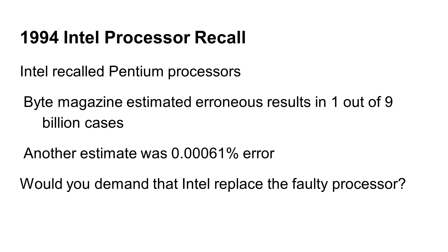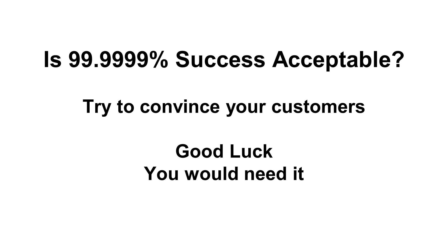In 1994, Intel's Pentium processors had some problems. In some cases, the processors produced wrong results. If you had bought this processor, would you accept the tiny fraction of possibility of mistakes, or would you demand a replacement? I am sure you would demand a replacement. You demand perfection. You must accept the rules you have set. 99.99999% of success is failure. That is the rule you set to the companies, and that is the rule for computers.